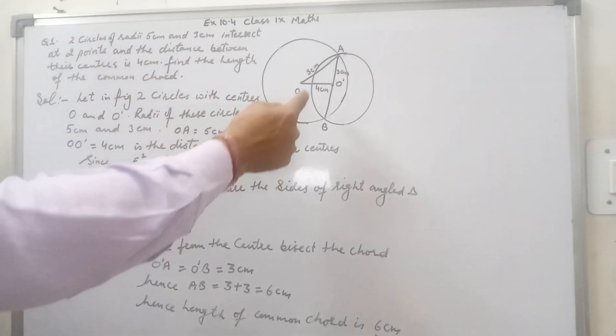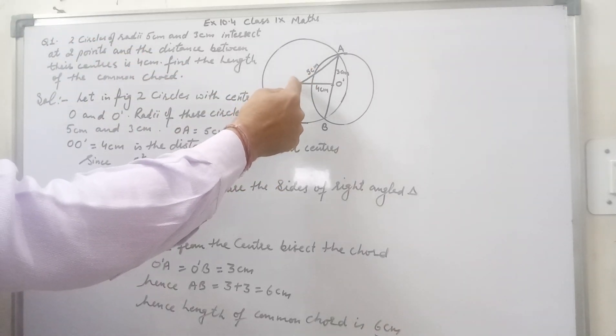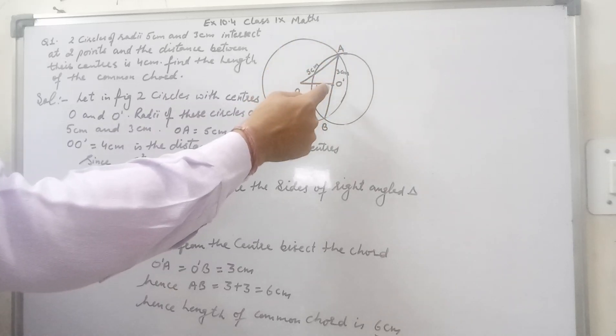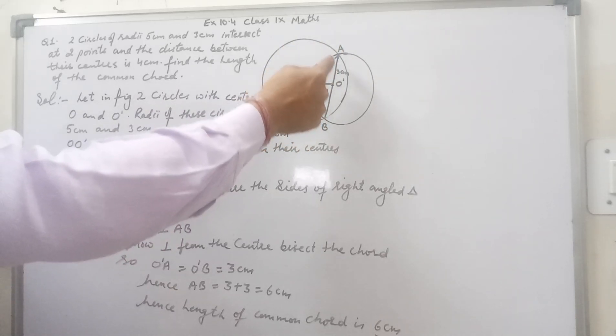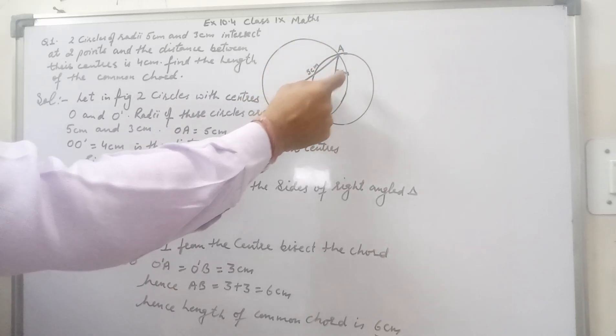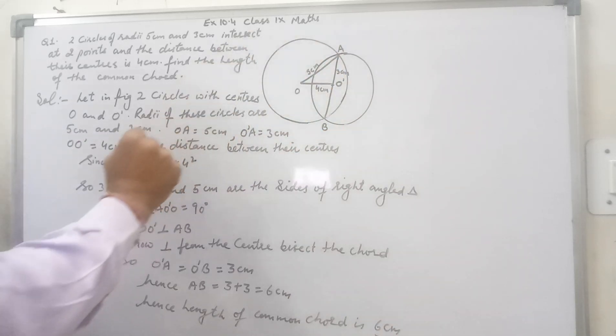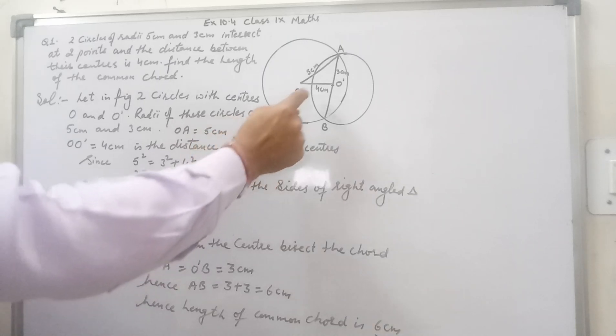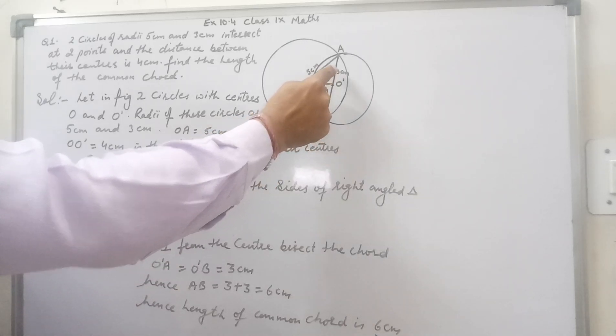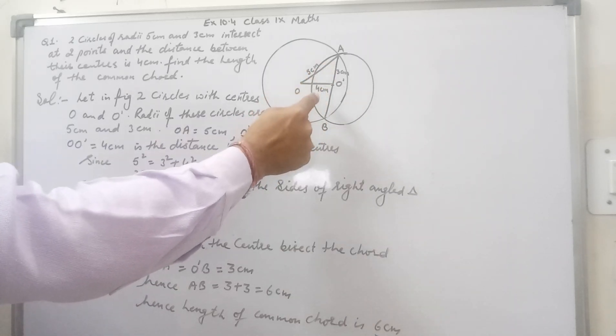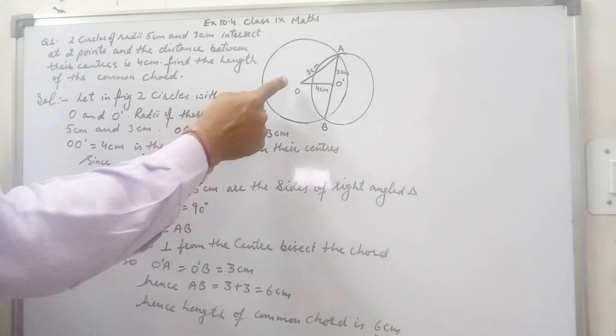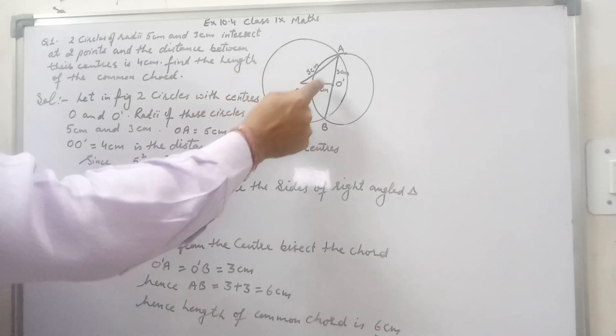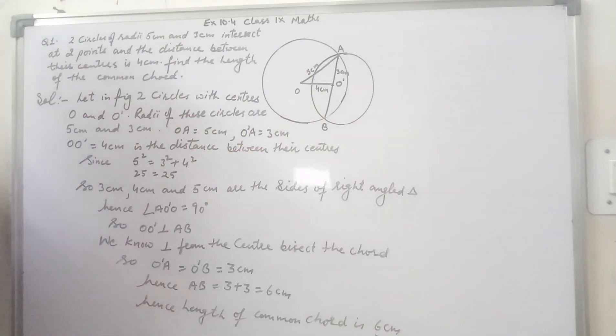In triangle OA O dash the side measures are 4 cm, 3 cm and 5 cm and we know 5 square is 25 and 4 square plus 3 square is 16 plus 9 that is 25. We can see here that 5, 4, and 3 are Pythagorean triplet.